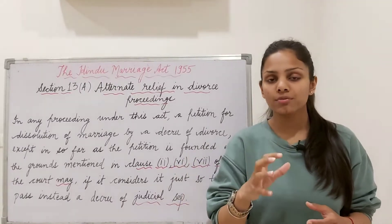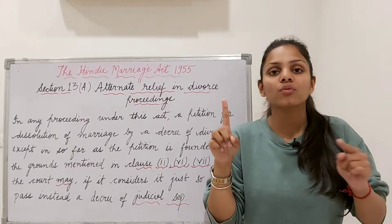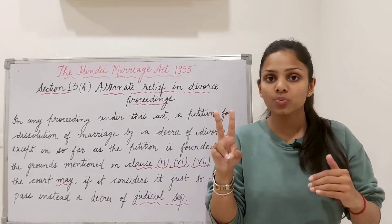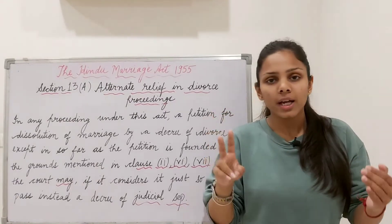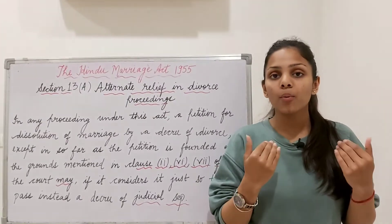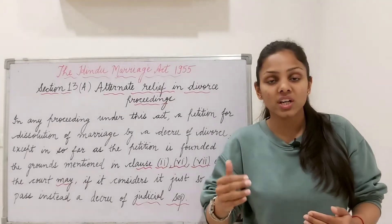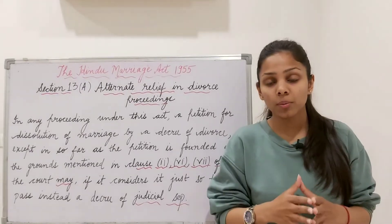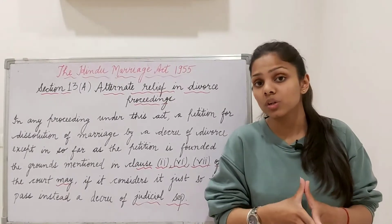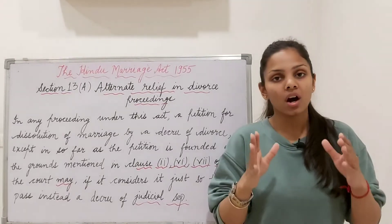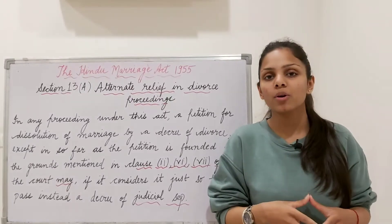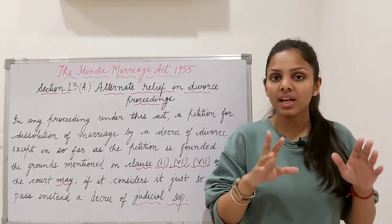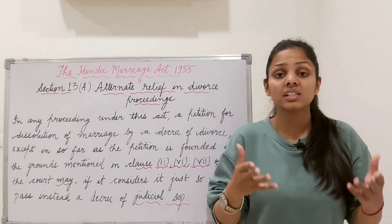Change of religion means conversion — you have ceased to be a Hindu by converting to some other religion. Renunciation of the world means either spouse has renounced the world by entering into a religious order — for example, the husband or wife has become a sanyasi, abandoning worldly life. Presumption of death means the court has presumed that for 7 years, the husband or wife's whereabouts are not known, even to those persons who would naturally have known of them had they been alive.